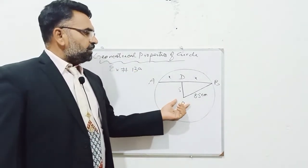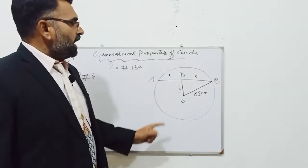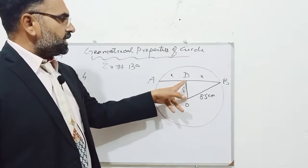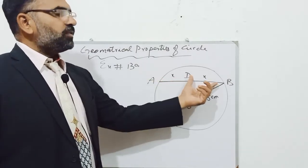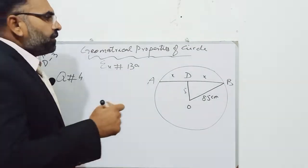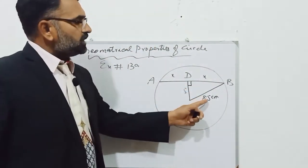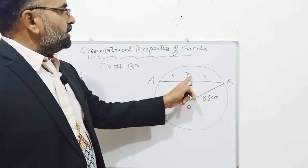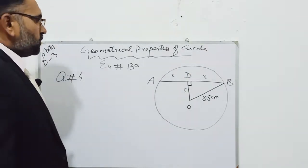In a figure, there is a circle with center O whose radius is 8.5 cm, and a chord AB is 5 cm away from the center, and we have to find the value of x, that is half of the chord. It is a very simple question because there is a right angle triangle whose hypotenuse is 8.5, perpendicular is 5, and base is DB that we have to find. So we will apply Pythagoras theorem.